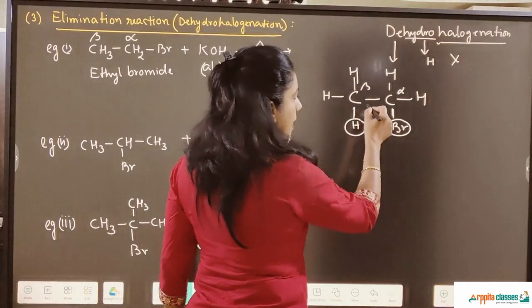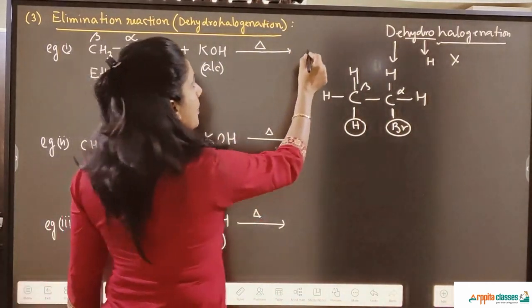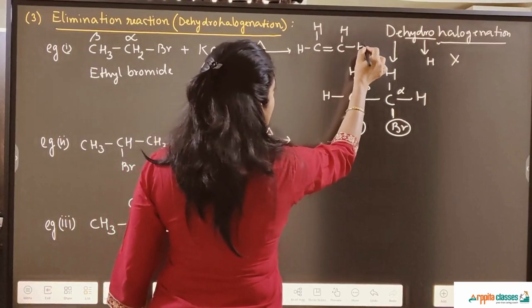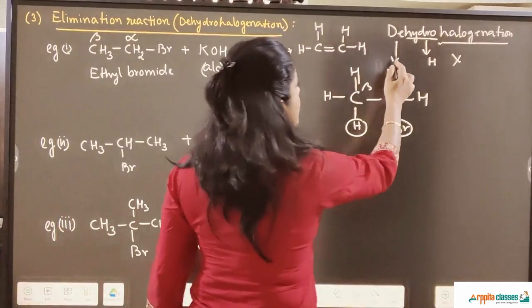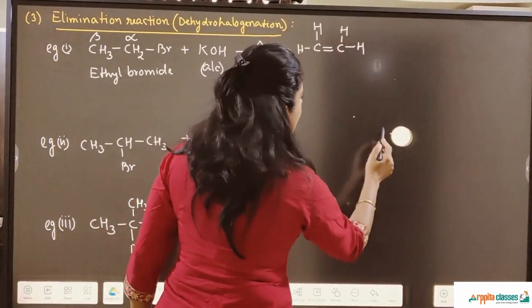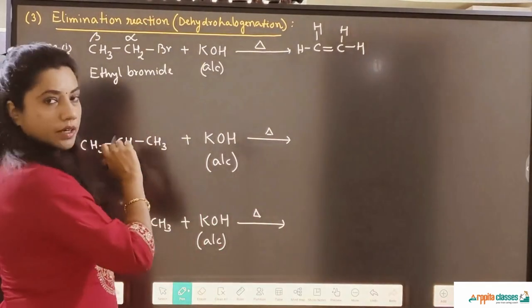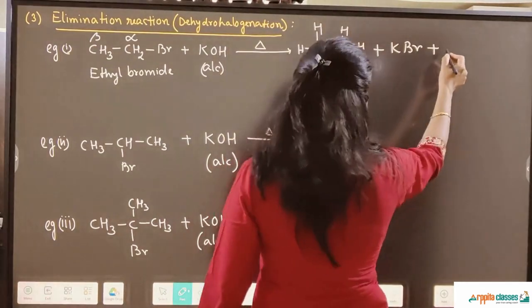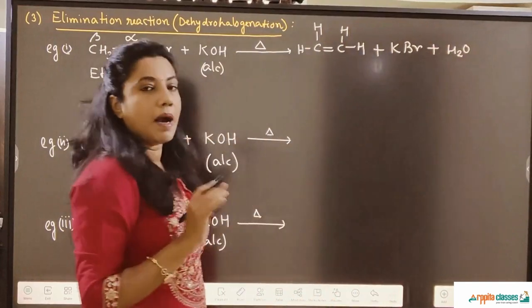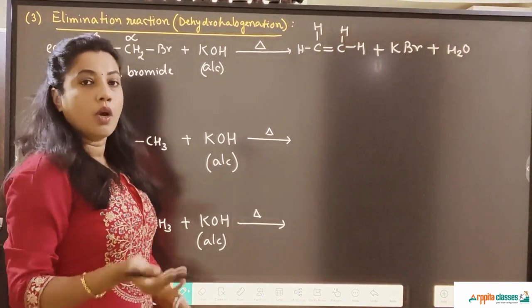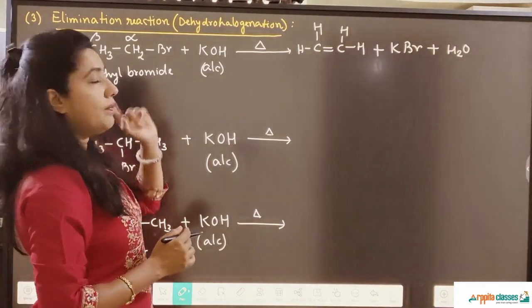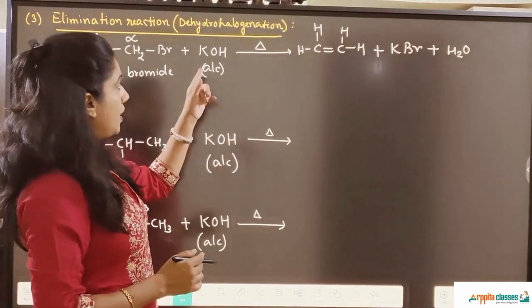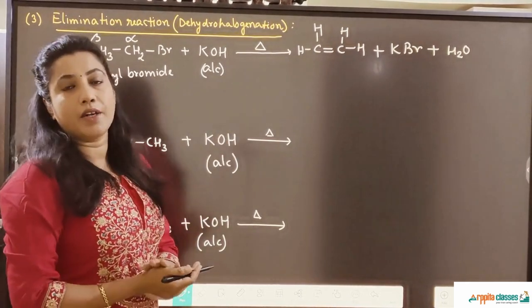These two bonds will combine together to give a double bond. So the product will be CH2=CH2 — the main product is the ethene molecule. The Br which has come out will react with K to give KBr. The hydrogen which has come out will react with the OH part to give H2O. The important part to remember is that the KOH has to be alcoholic KOH. If we take aqueous KOH, the product is alcohol; if we take alcoholic KOH, the product will be the dehydrohalogenated product.